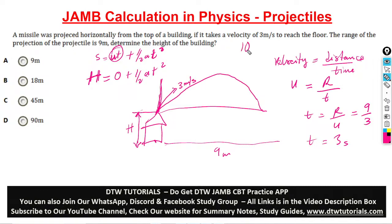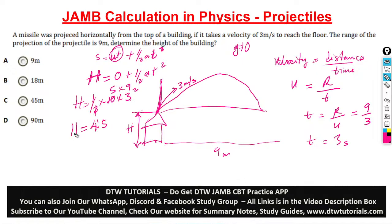Since vertical initial velocity is zero, we have h equals zero plus half times a times t squared. Our acceleration a is acceleration due to gravity, which is 10. So h equals half times 10 times 3 squared. The half cancels giving 5, and 3 squared is 9, so 5 times 9 gives us 45. The height of the building is 45 meters. It's a different approach when a projectile starts from a height rather than the ground floor.